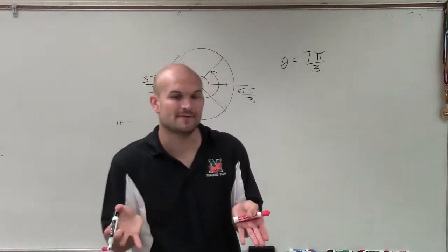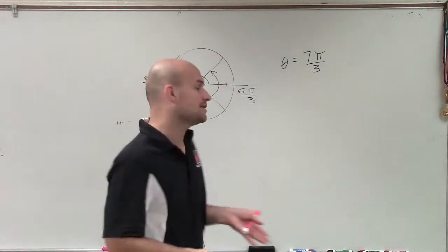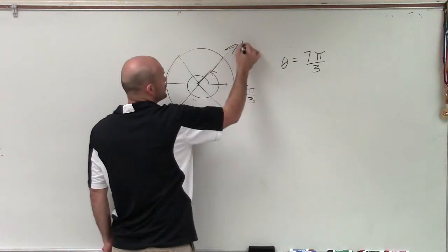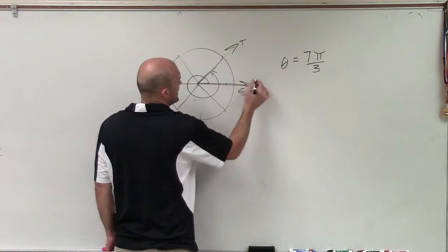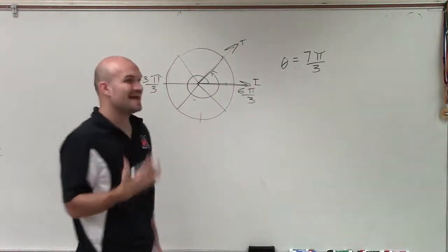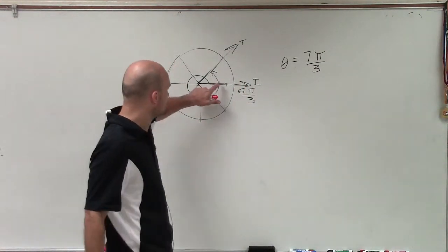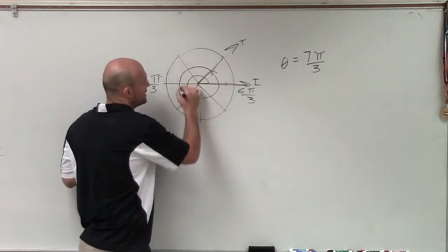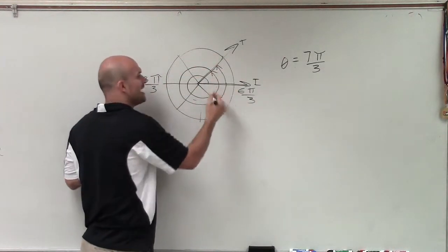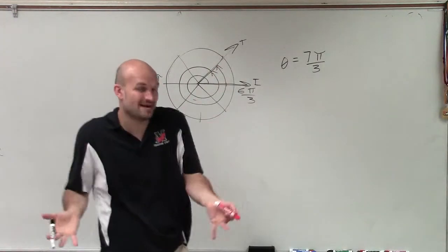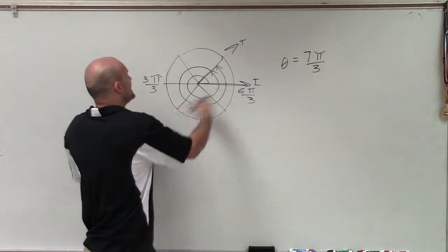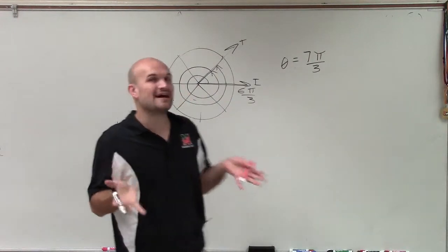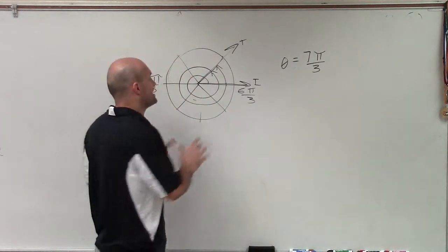Since my angle is greater than 2π, where there's my terminal side and here's my initial side, I need to find another angle that's going to have the exact same initial side and exact same terminal side. Obviously, I could add another set of 2π - I can just keep on doing it infinite many times. However, if I just keep on adding 2π, I'm just getting larger and larger numbers. So I need to find the smallest positive coterminal angle.